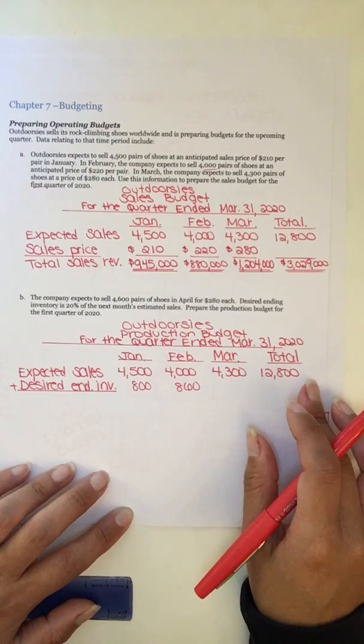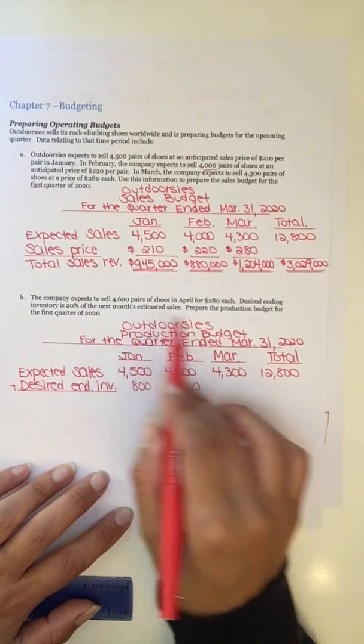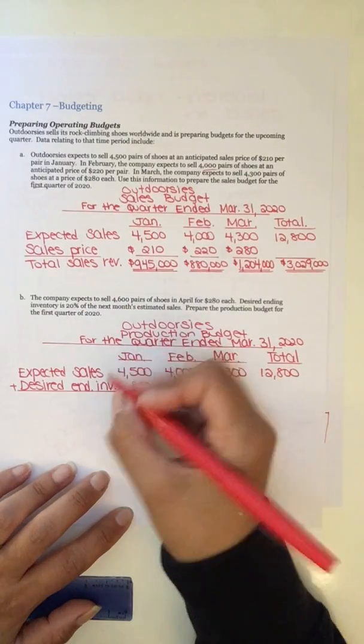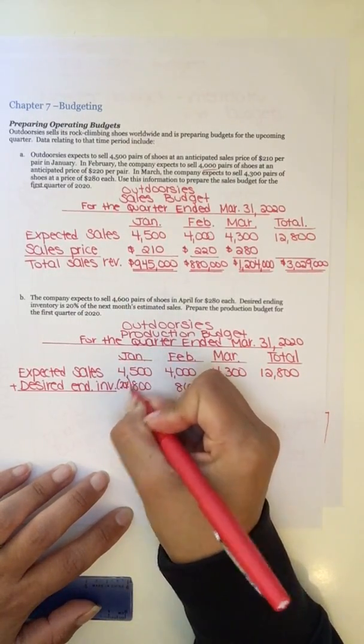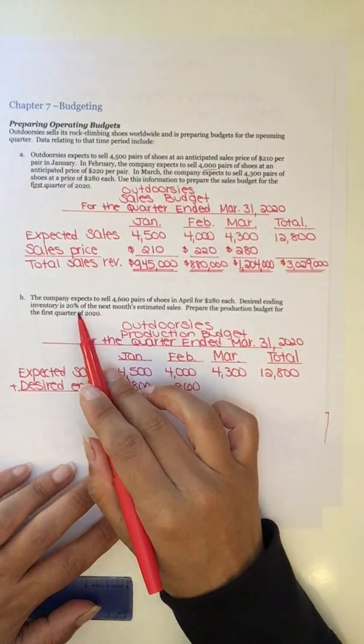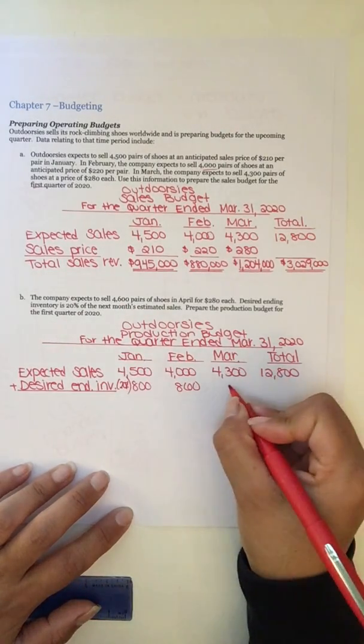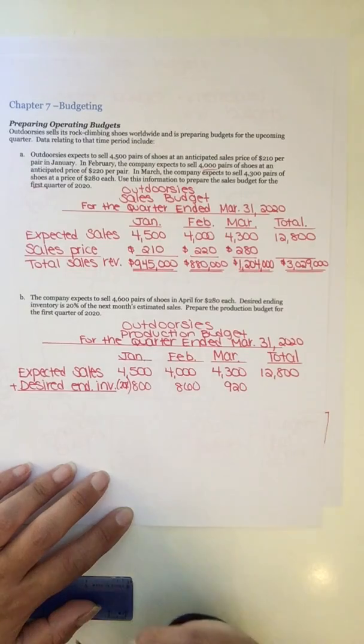So this is why they gave us that first sentence. It tells us how many pairs we're going to sell in April because we need to, in order to finish the March column, we need to know what April's sales are. So that's why they gave us that first sentence. So go ahead and take the 20% and if you want to you can even write 20% in here so you remember. 20% of April sales, which is 4,600 pairs, that gives you 920.